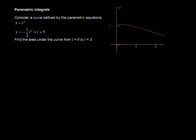In this video, I'll walk through an example of taking the integral of parametric equations. Consider a curve defined by the parametric equations x equals t squared and y equals negative one-half t squared plus t plus 5. Find the area under the curve from t equals 0 to t equals 3.